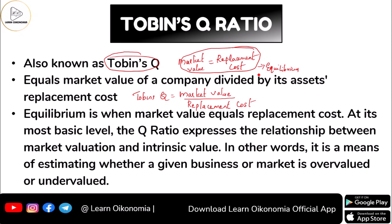The Tobin's Q ratio expresses the relationship between market valuation and intrinsic value. It involves estimation regarding whether a given business is overvalued or undervalued. Just by looking at this concept of the Q ratio, we can see whether there is overvaluation or undervaluation.